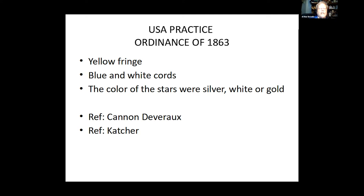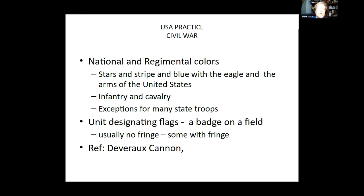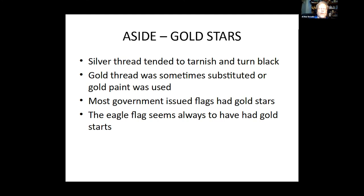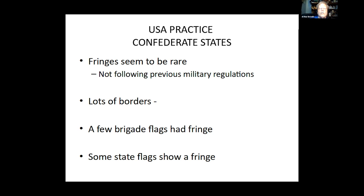By 1863, the ordinance says yellow fringe, with blue and white cords and stars colored silver, white, or gold. National and regimental colors in the Civil War varied all over the place — mainly the stars were gold. Silver thread tended to tarnish, so gold thread was sometimes substituted or gold paint was used, and most government flags had gold stars. The Confederate States: looking through the literature, fringes seem to be rare — they were not following previous U.S. regulations. There are lots of borders, however, which may have been an attempt to show fringe without the expense of having one. Some brigade flags had fringes; some state flags show fringes.